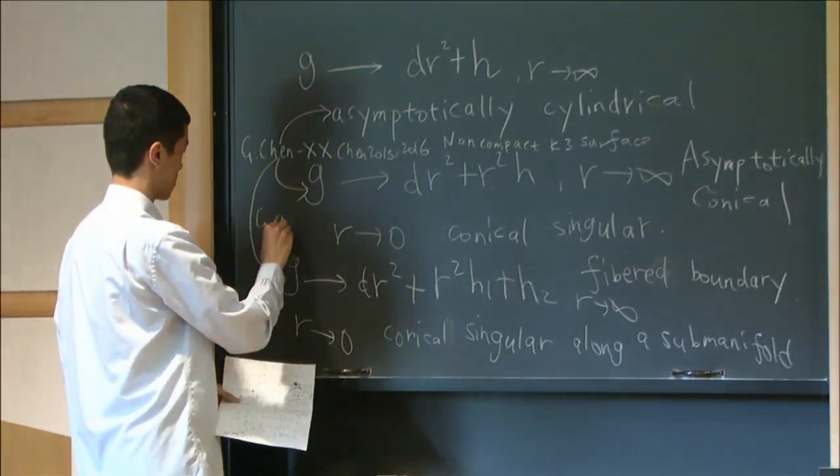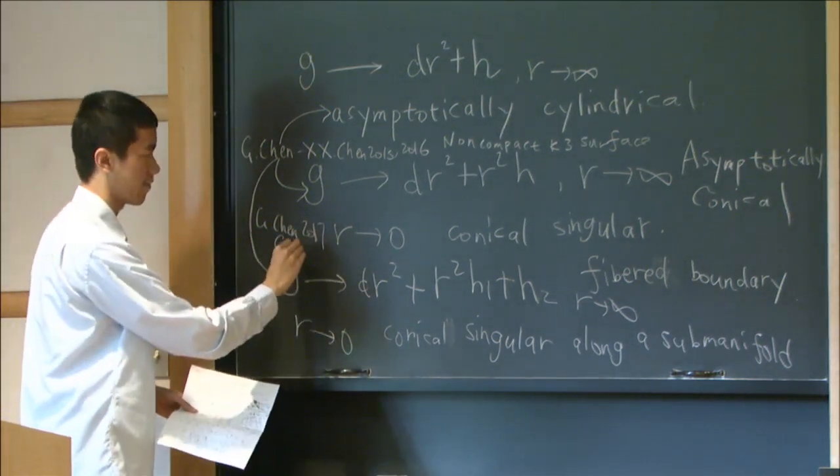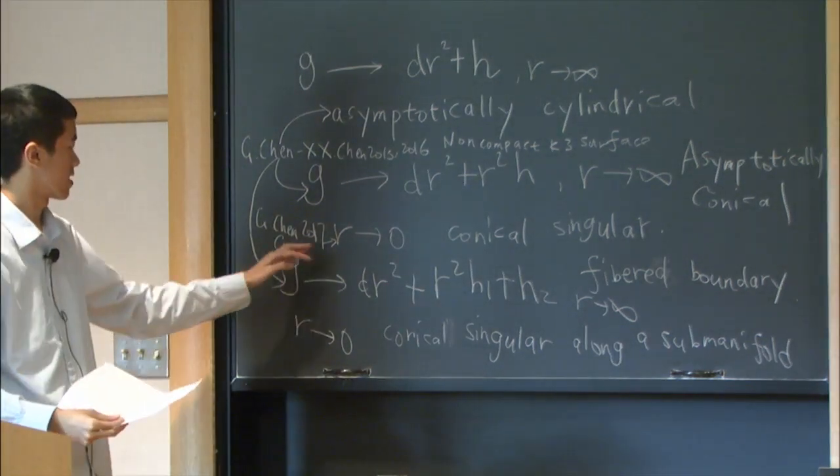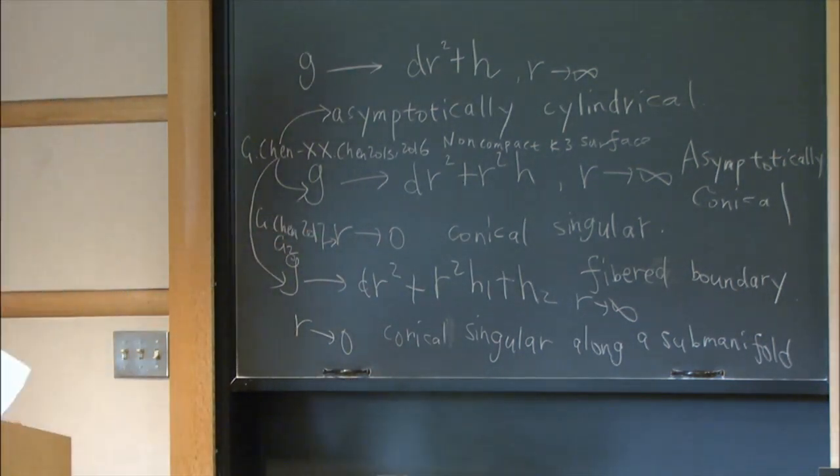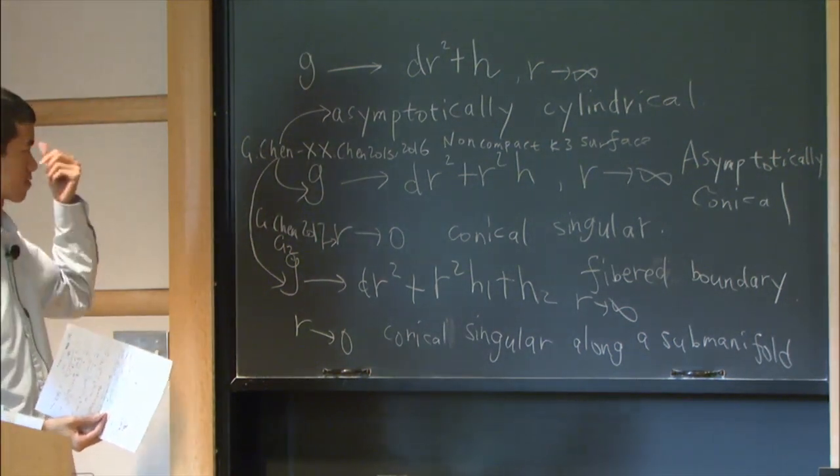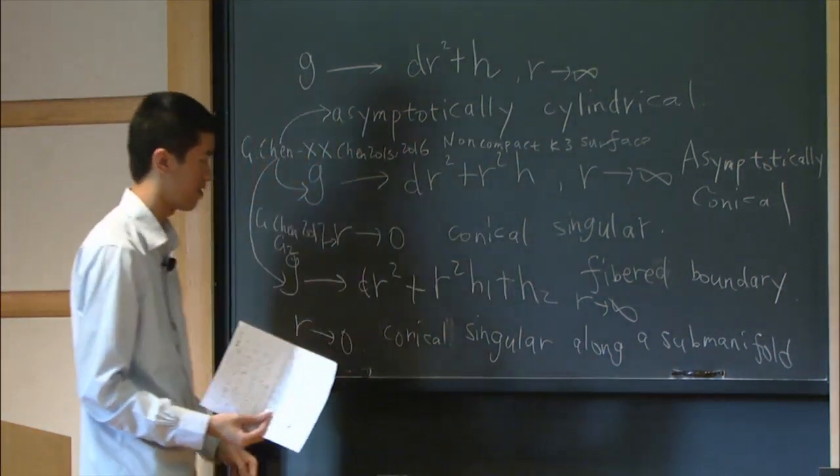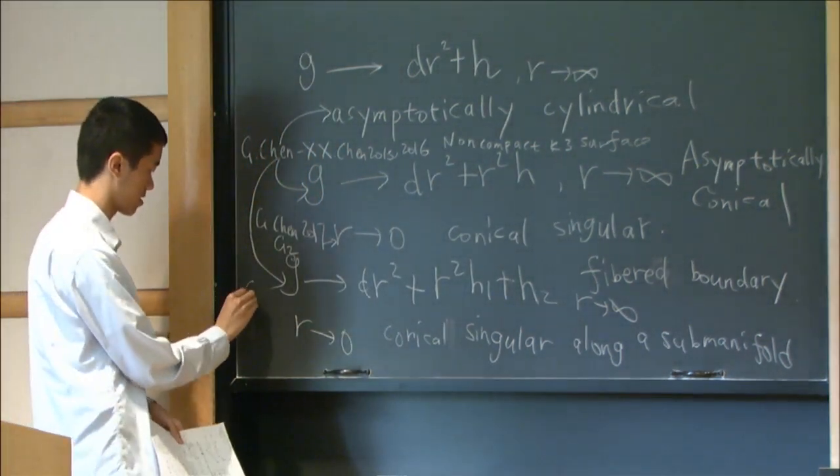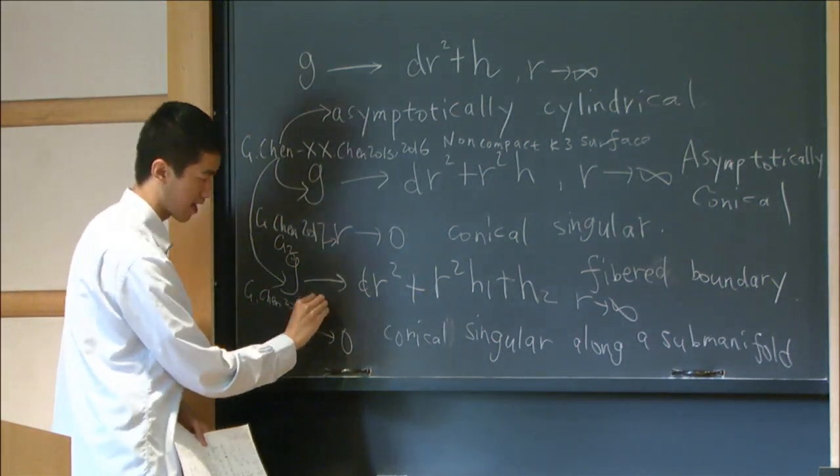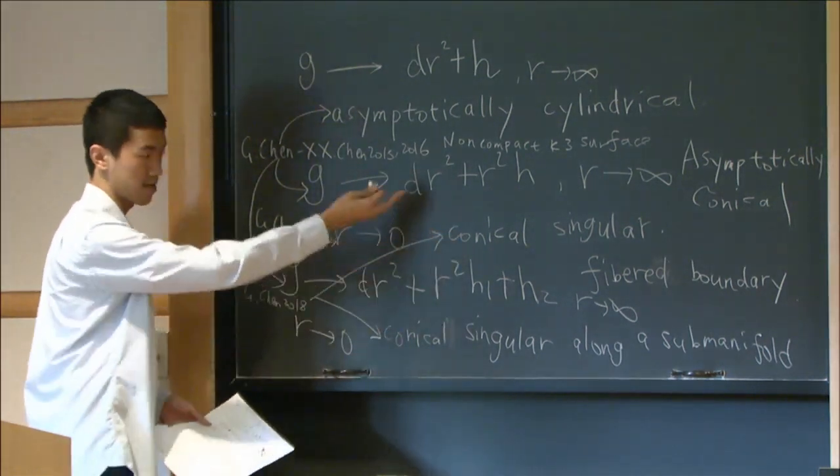And then, I have another work in 2017 about an example of G2 manifold with this conical singularity. But it's a local model. And in the last year, I did something which want to construct a global G2 manifold with this conical singularity. And the method I used is something related to conical singularity along submanifold and the conical singularity.